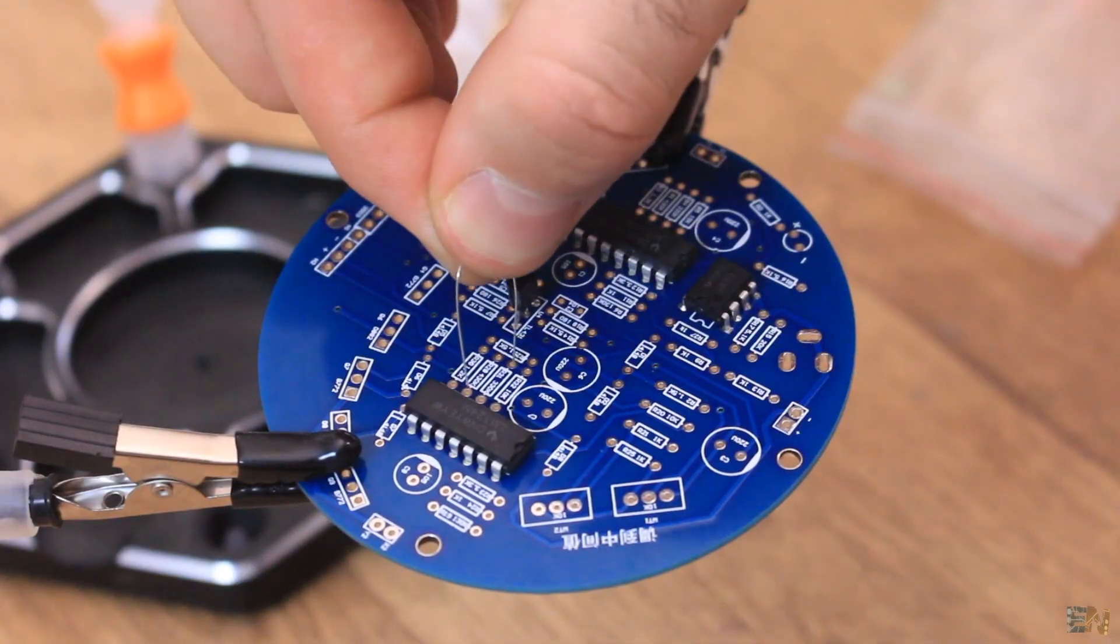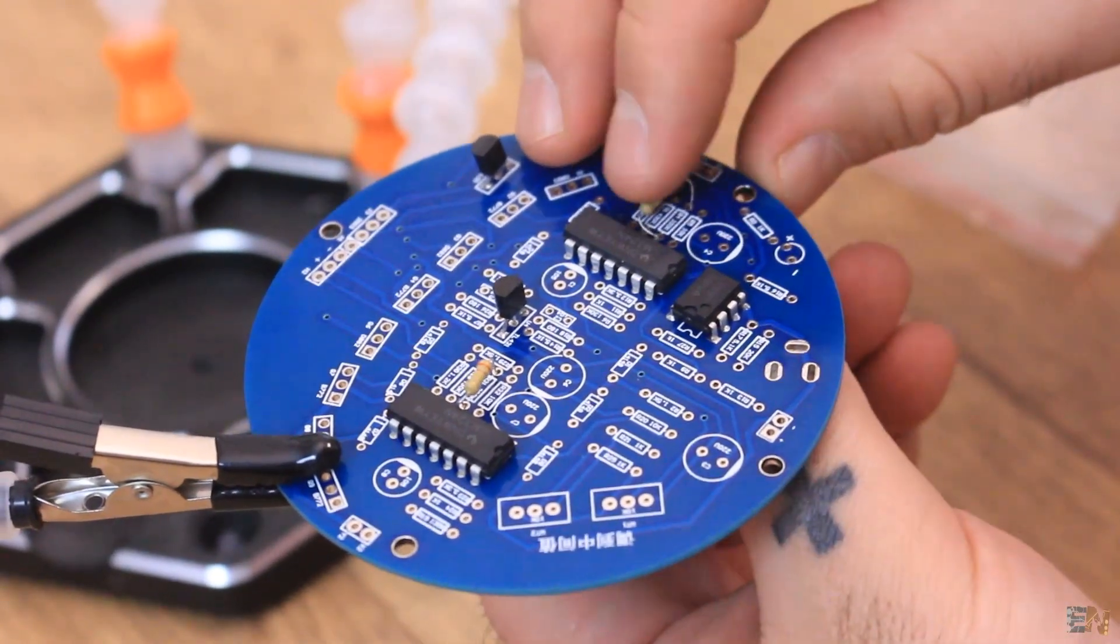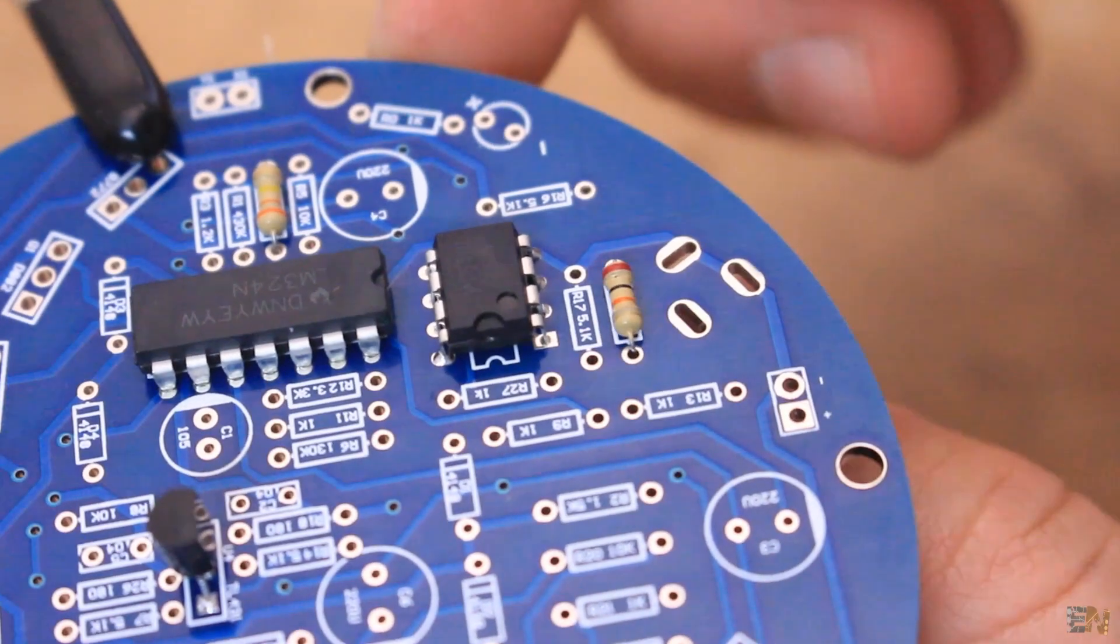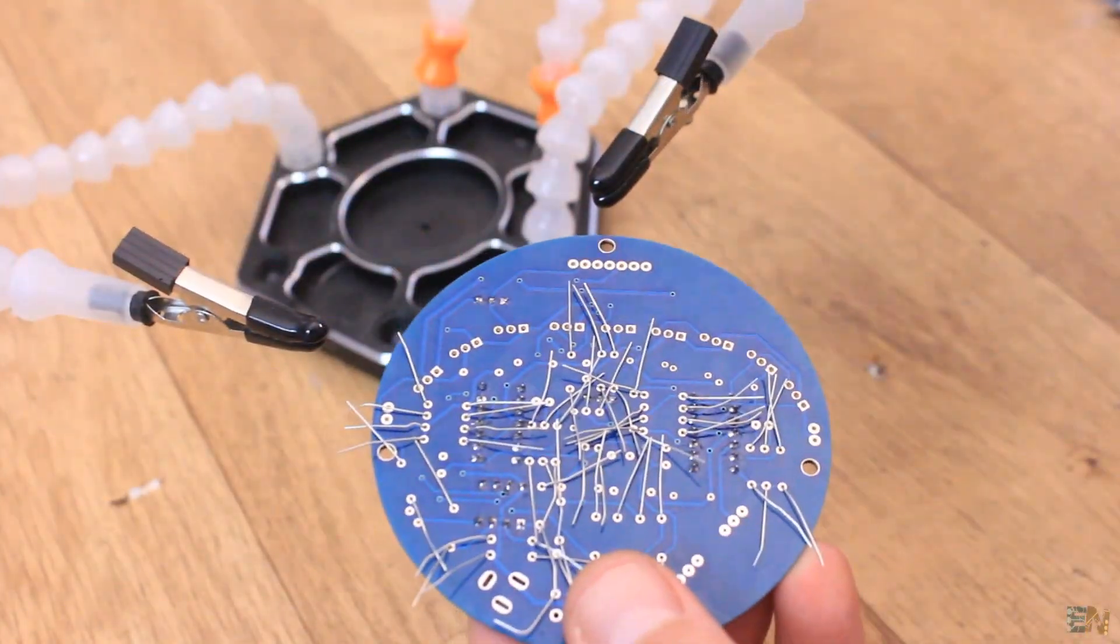Now I solder all the resistors. The value is labeled onto the PCB and each plastic bag shows you the value. Add the resistors, flip the board, solder all the pads and remove the wires.